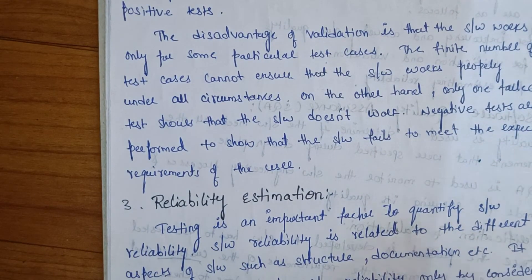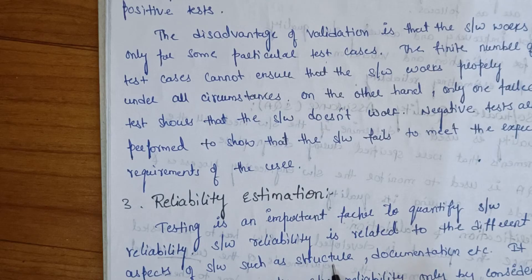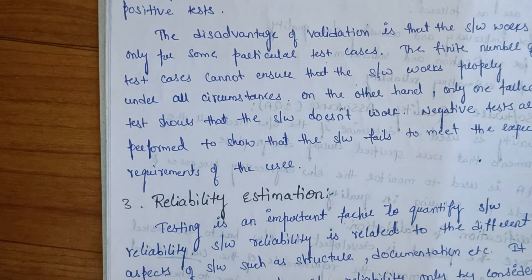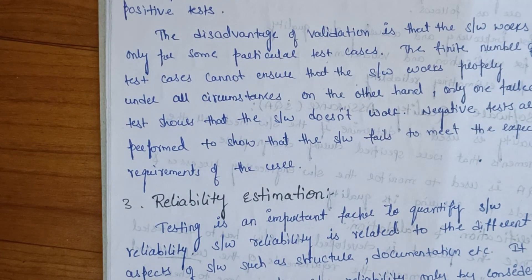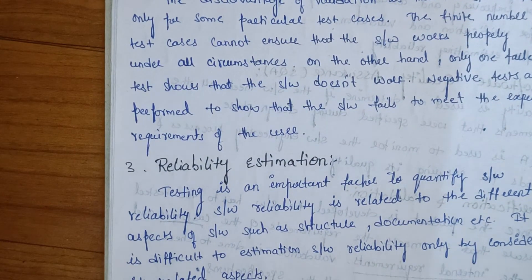Software reliability is related to different things of software such as structure. It is difficult to estimate software reliability only by considering related assets — we need to consider a lot of factors.